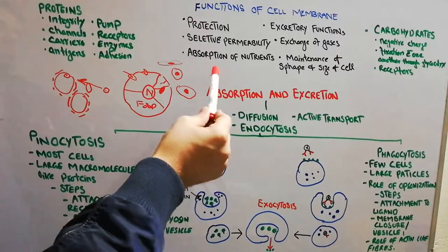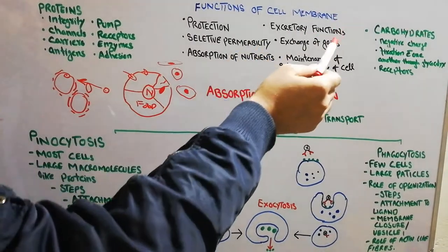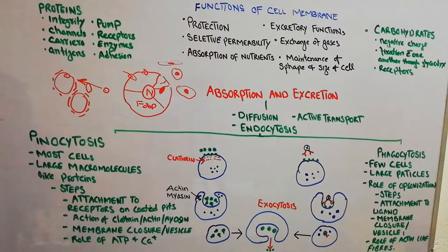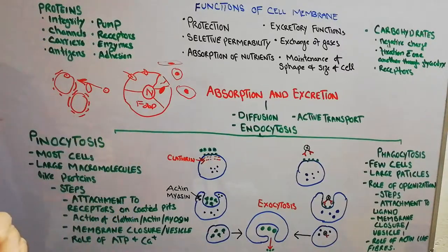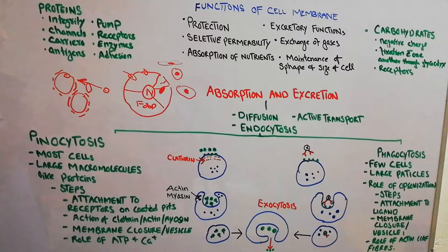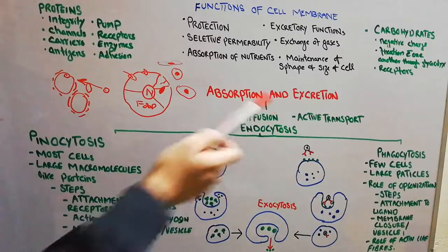Now let's study the different methods through which the cell membrane absorbs or excretes substances. There are different methods through which a cell may absorb or excrete nutrients, electrolytes, or water. The most common are diffusion, active transport, and endocytosis.